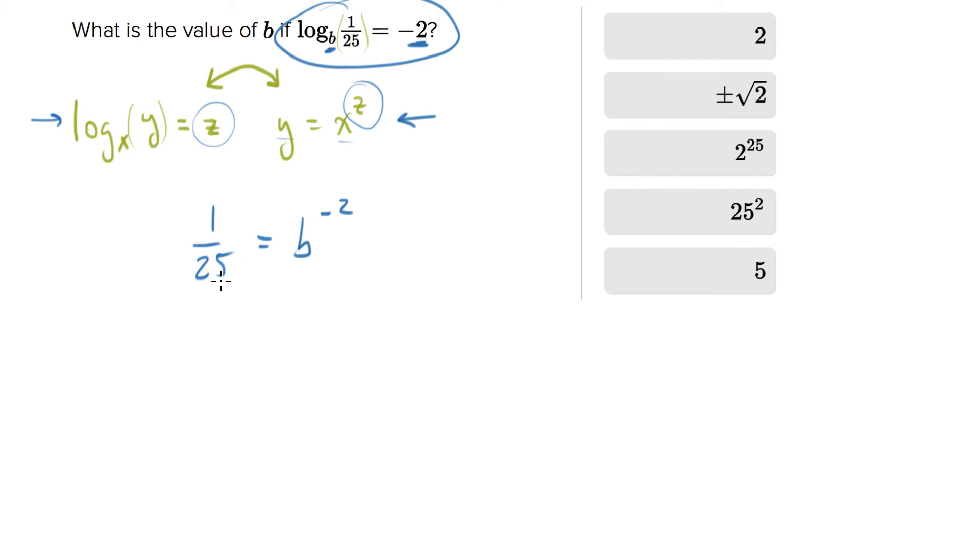Let's get rid of that negative exponent. Remember that a negative exponent can be neutralized by writing a fraction for the same exponent, except you get rid of the sign. So b to the negative two is equal to one over b squared.